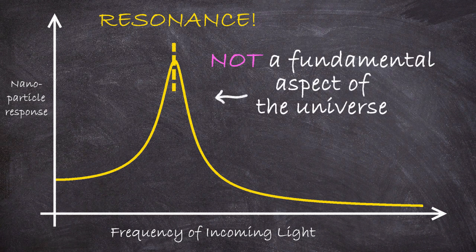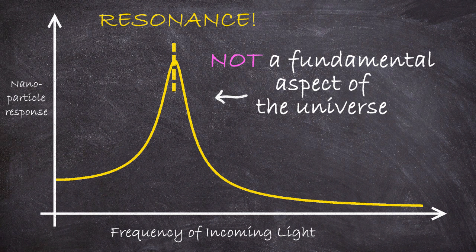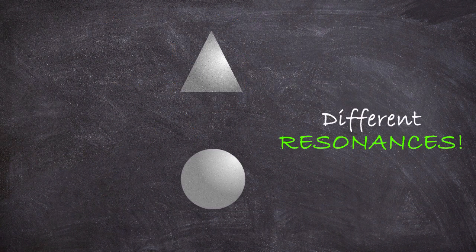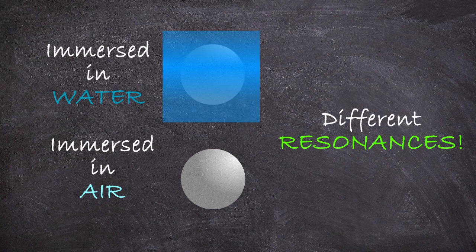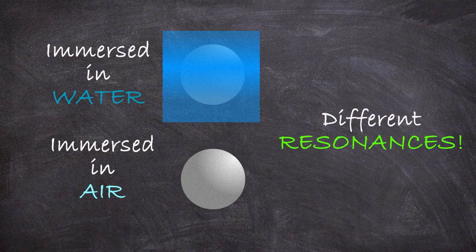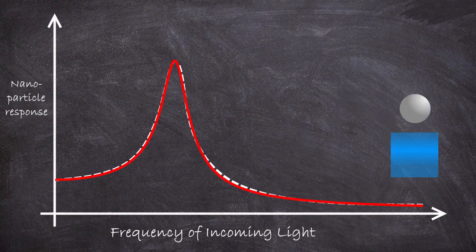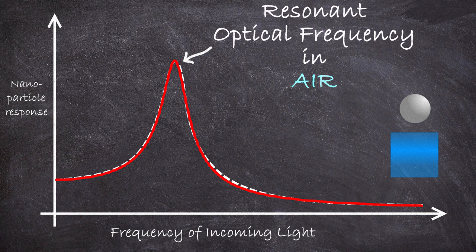Now the frequency of light at which this resonance occurs isn't some universal property. It's not some fundamental property of the cosmos, but rather it depends on things like the material property of the metal, the shape and size of the nanoparticle. And importantly, and this is our third important plasmonic property, it depends on the environment around the nanoparticle.